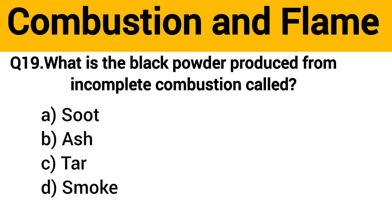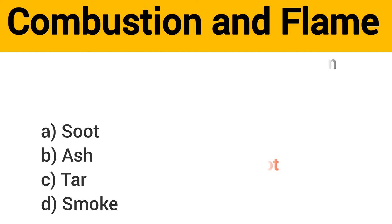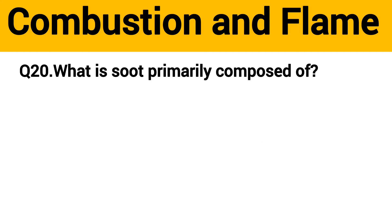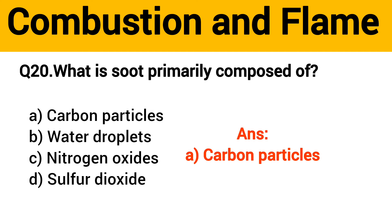Question number 19: What is the black powder produced from incomplete combustion called? The right answer is option A: Soot. Question number 20: What is soot primarily composed of? The right answer is option A: Carbon particles.